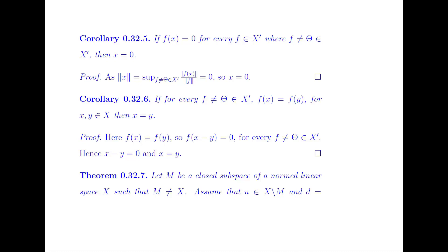From this we can deduce: if f(X) = 0 for every nonzero functional f in the dual of X, then X = 0, since norm(X) = sup |f(X)| / norm(f) = 0. Also, if f(X) = f(Y) for every nonzero functional f on the dual of X, then f(X − Y) = 0 for every such f, implying X − Y = 0, and hence X = Y.